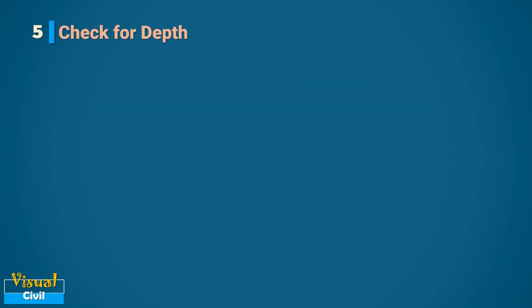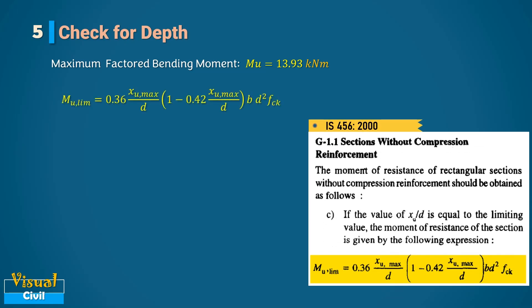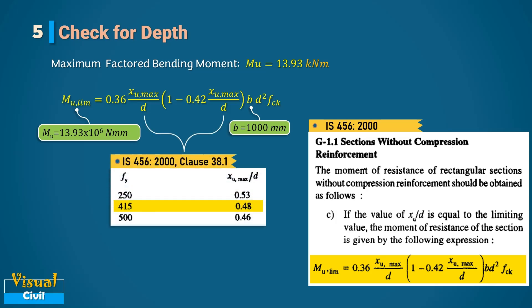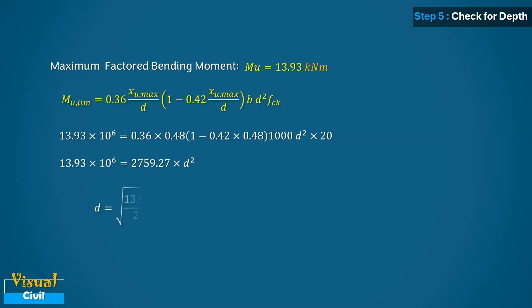Let us check the adequacy of the assumed slab depth for the maximum design moment. Using the expression from clause G1.1 of IS 456, with the maximum design moment substituted in place of Mu-lim and B equal to 1000 mm for unit width of slab, and the value of Xu-max/d from clause 38.1, the minimum effective depth required is 71 mm, which is less than the provided effective depth of 120 mm. Hence, the slab depth is adequate.